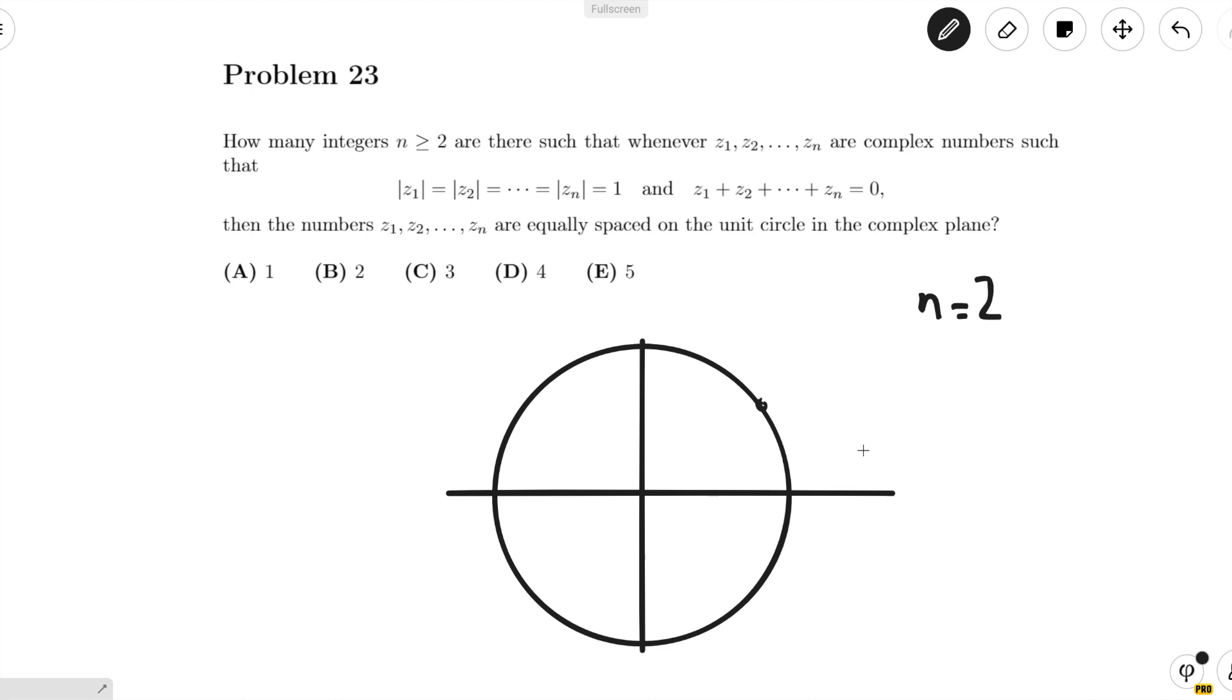So that means that if the complex number satisfied the equation before, it will still satisfy it after the rotation. And if it didn't satisfy before, it won't satisfy it after the rotation. So we can move z₁ to be on the x-axis, or z₁ is equal to 1.